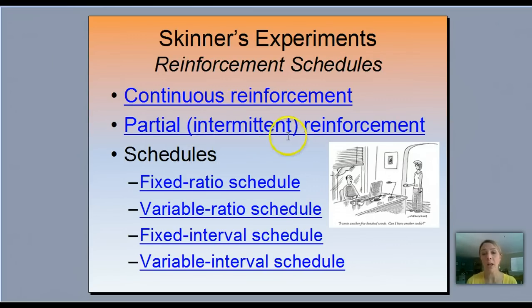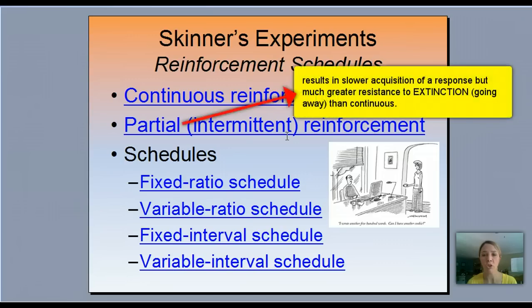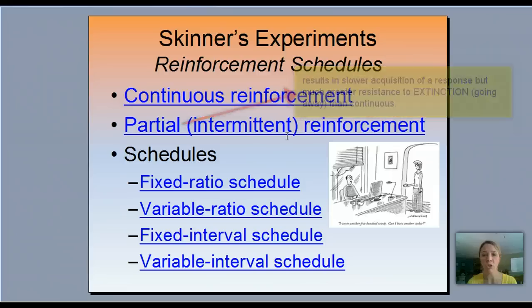Partial intermittent reinforcement is very much like a slot machine. You might play a slot machine for an hour, and then after an hour of playing you get a big jackpot. So that's intermittent reinforcement — you don't get it every single time, but every thousands of times you pull the lever, you get that jackpot.